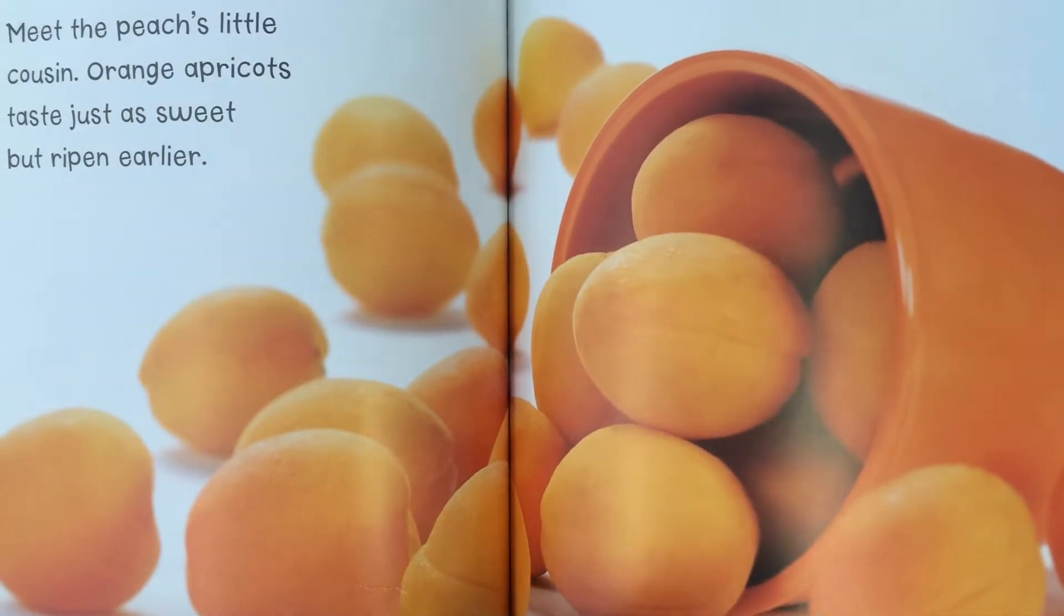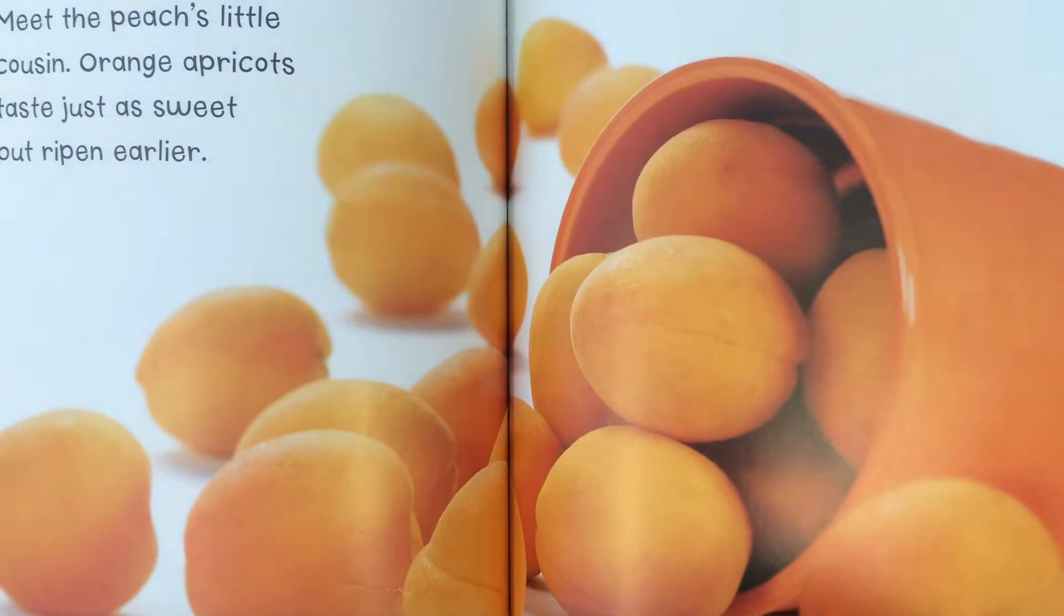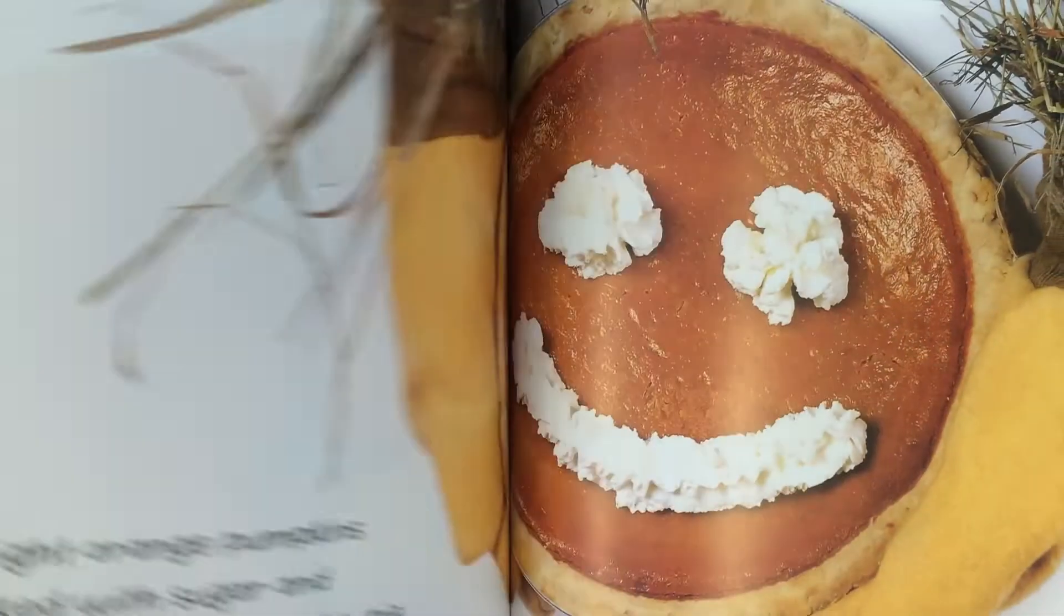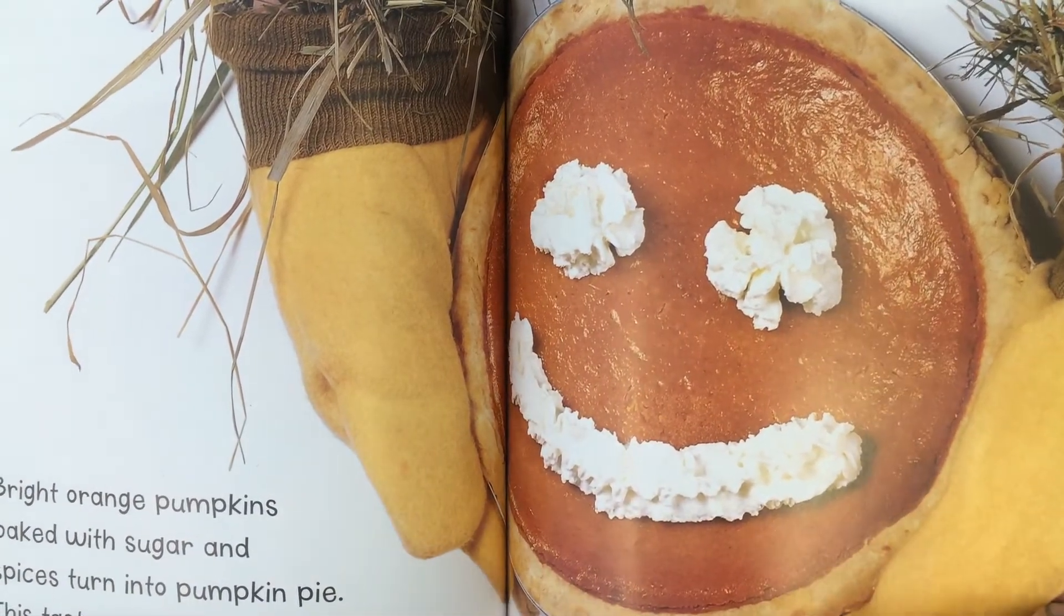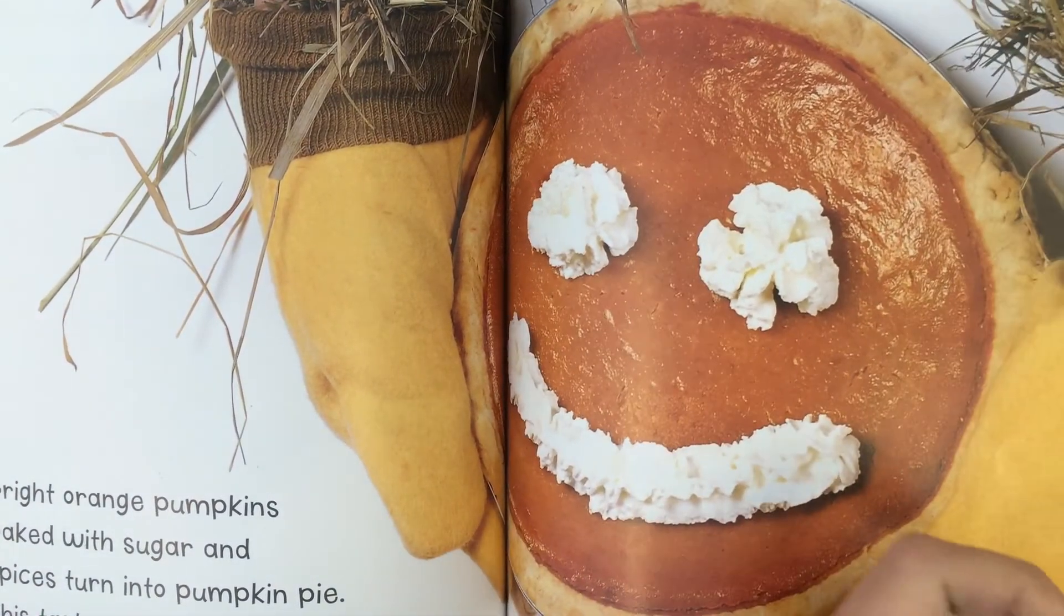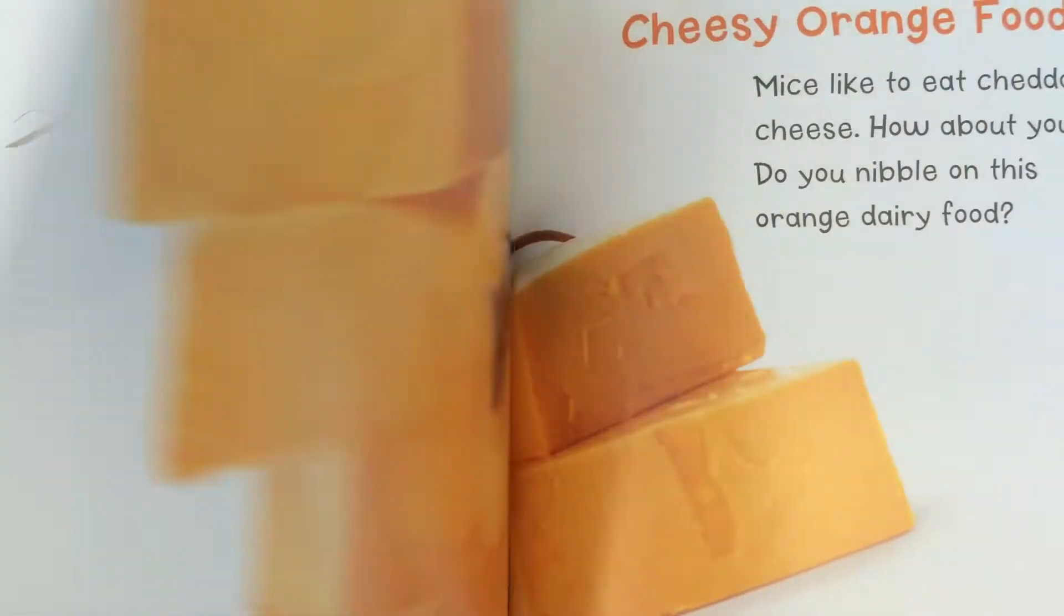This is an orange apricot which is the peach's cousin. That's pretty cool. Here's a pumpkin pie. You might have pumpkin pie at Thanksgiving time. So I'm just trying to spark your memory and make you think about different foods that you love.